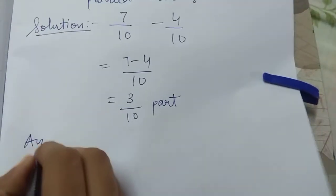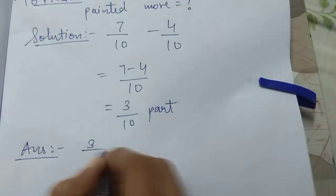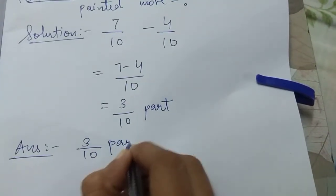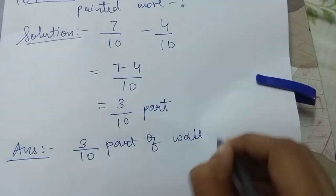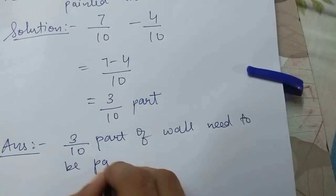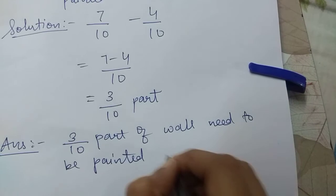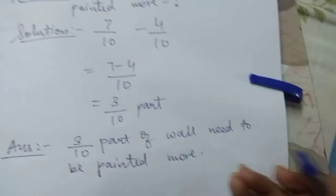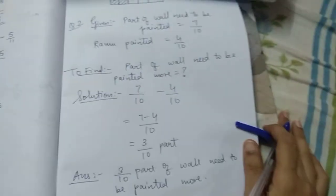So what will be our final answer? Answer statement will be 3 by 10 parts of wall need to be painted more. So this was question number 2.